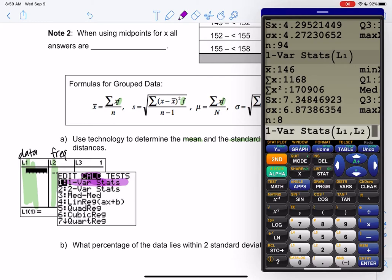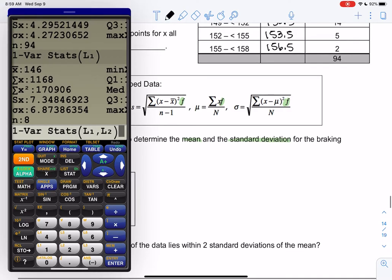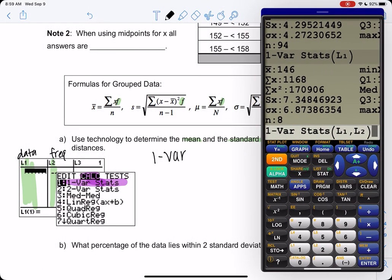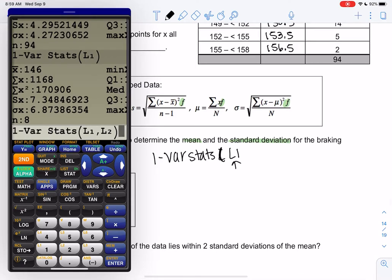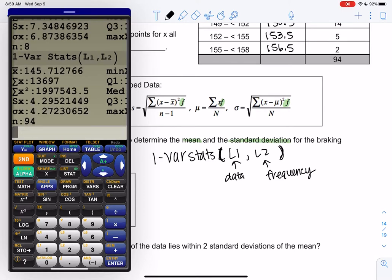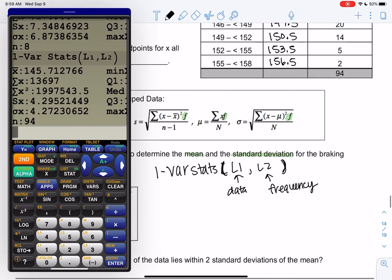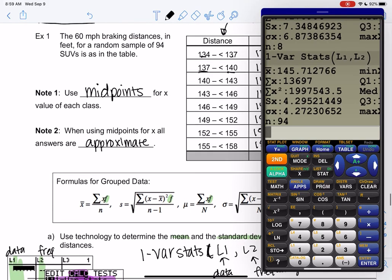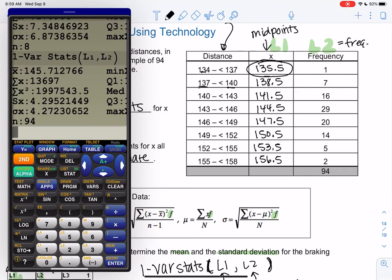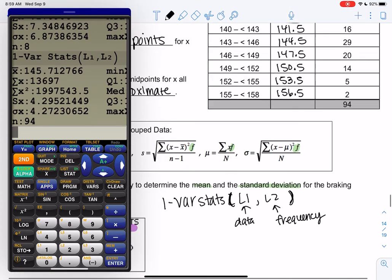So we're telling the calculator, hey, my data is in L1, but my frequencies are in L2. Parentheses, this is my data, comma L2. So we didn't have to do this before because we never had frequencies. It assumes the frequency is one if we don't have that. And this is all considered an approximation because we don't know the actual data values. Remember, we use the midpoints. So it's probably likely that this isn't exactly 135.5. These aren't all 138.5, but that's the midpoint of that range. So these are approximate numbers.